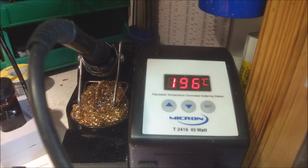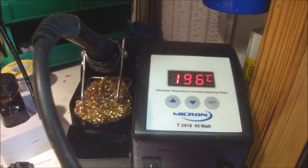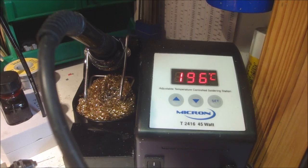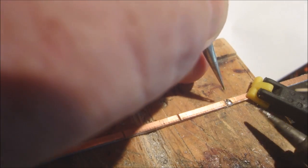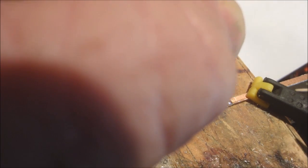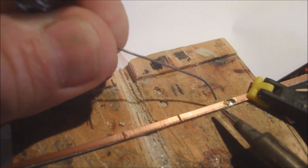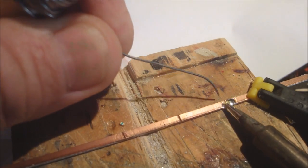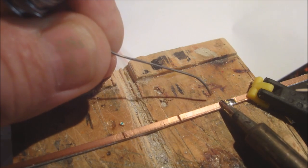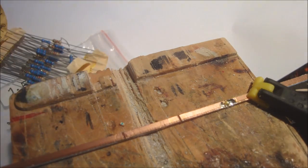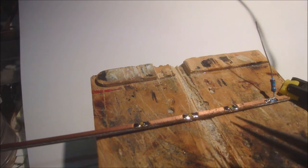I've got my soldering station set at 196 degrees centigrade for soldering these. I've tinned one side, put a little bit of tin on there, and we're going to put the LED on there now. Heat one side on, that's the LED holding itself, and just do the other side. So there we go, there's one LED on.